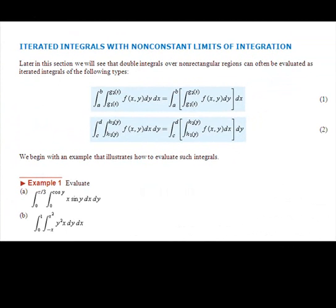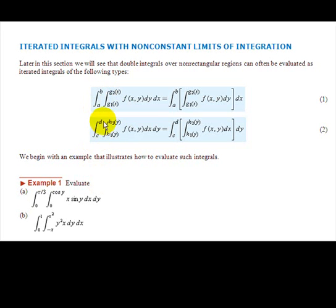Up to this point, the only double integrals we've considered had numerical bounds for both integrals. In other words, we were integrating from a to b and c to d. Now we're going to be integrating from a to b and from some function of x to another function of x, or from c to d and from some function of y to another function of y, so our bounds might not be constants.